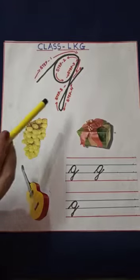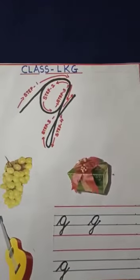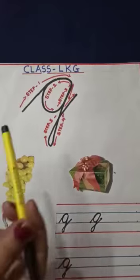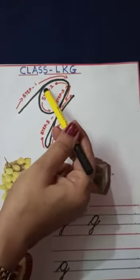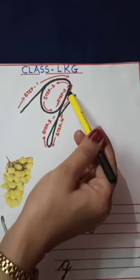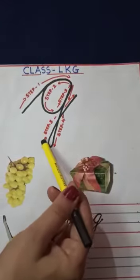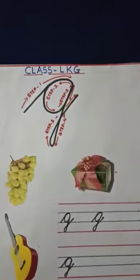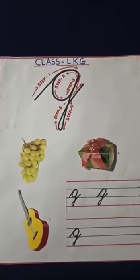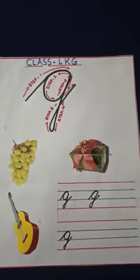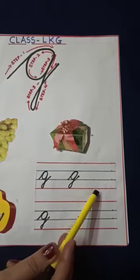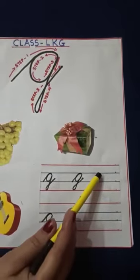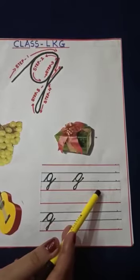To make cursive G, we have to follow 5 steps. Step 1, Step 2, Step 3, Step 4, and Step 5. Now see how to make cursive G. We use these 3 lines to make cursive G — 2 middle lines and 1 bottom line. Okay kids?